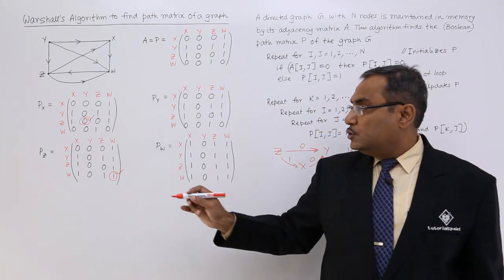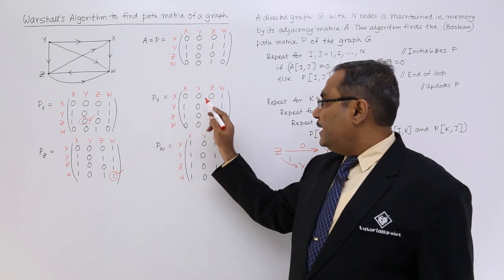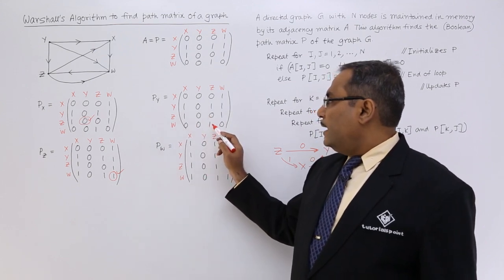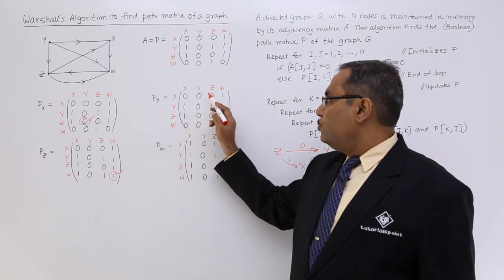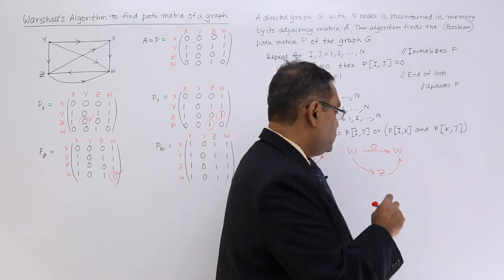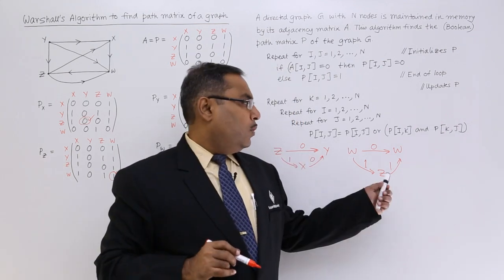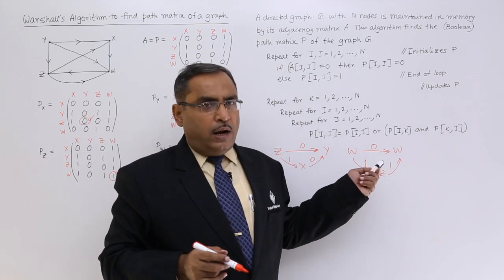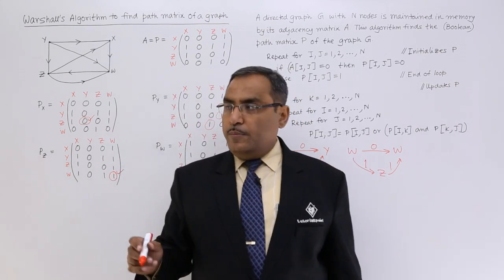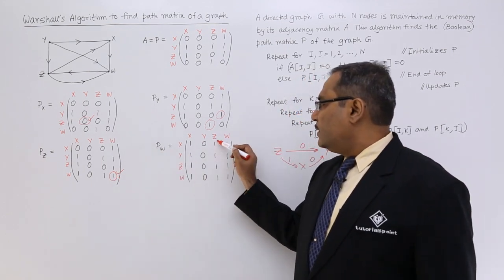Let me check. w to z is 1 and z to w is also 1. Now just go for 1 and 1. 1 and 1 is 1, and 1 or 0 is equal to 1. So, that is why ww this cell is having the value 1.